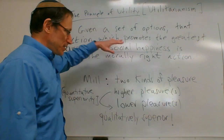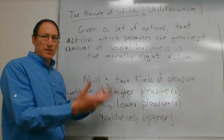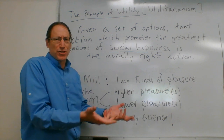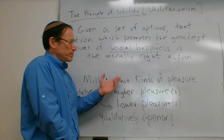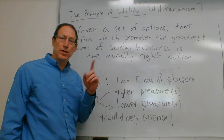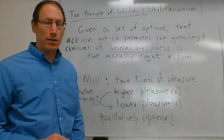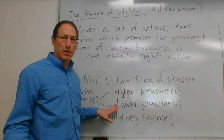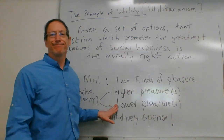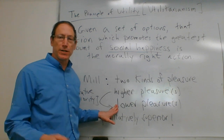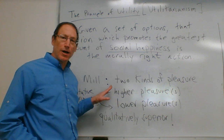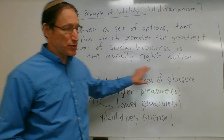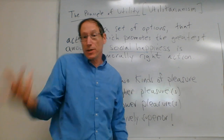Going back to the objection that utilitarianism is hedonistic: Mill's response is that those making the objection are thinking only of lower pleasures. If all we had were lower pleasures, this would be an animalistic theory. But it is not, because there are higher pleasures. There are also two kinds of pain — lower pains are physical pains, which are bad and unpleasant.